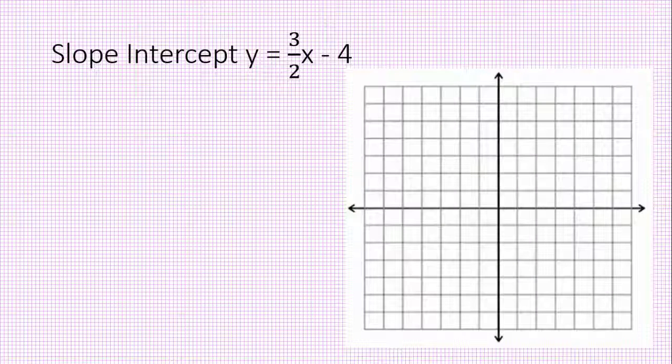Slope intercept form. So you've got the y-intercept at negative 4. If our scale is 1, that is right there. Then use the slope to find more points. So I'm going to go up 3 over 2. There's another point. I can do that as many times as I want.